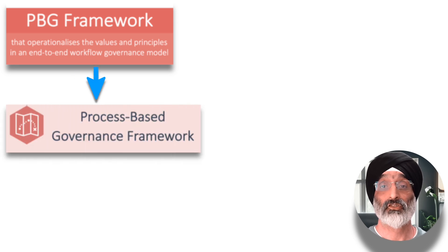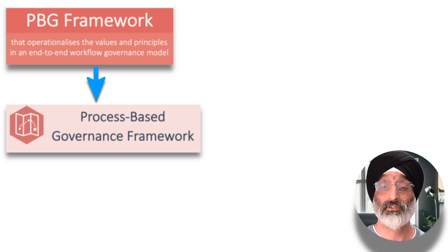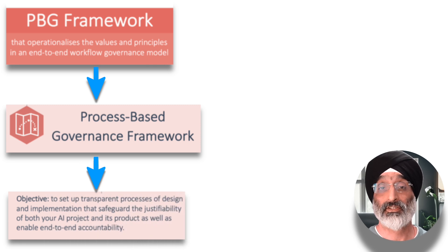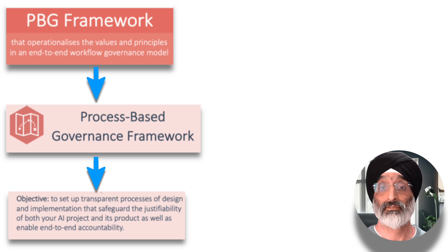The third and most concrete level seeks to ensure responsible AI project delivery through a process-based governance framework, or PBG, which is an essential element of the approach. This framework looks to operationalise the SUM values and FAST-track principles throughout the entire AI project workflow. Its objective is to establish transparent processes of design and implementation that safeguard and enable the justifiability of both the AI project and its product.